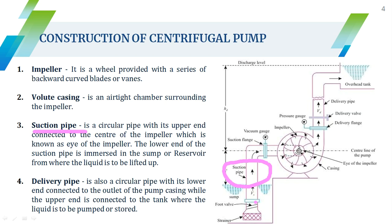The suction pipe has its lower end immersed in the sump or reservoir, and its upper end connected to the eye of the impeller. It is a circular pipe with its upper end connected to the center of the impeller and the lower end immersed in the reservoir. The suction pipe is very important because as the impeller rotates, water from the reservoir is sucked in and pushed to the overhead tank through the delivery pipe.